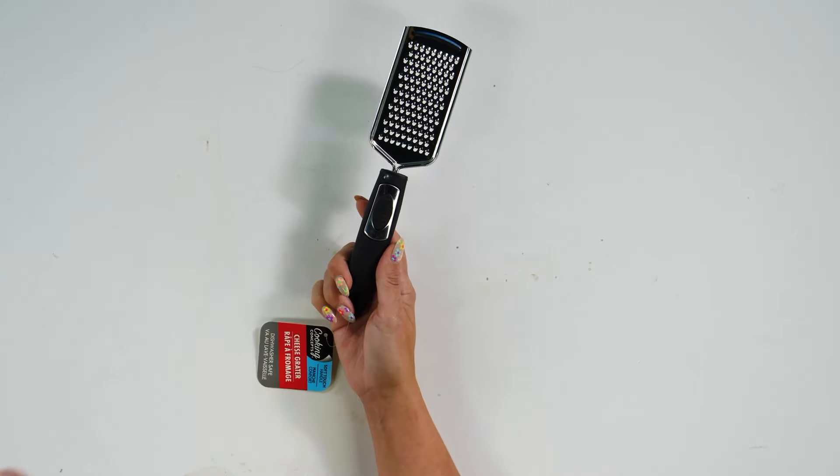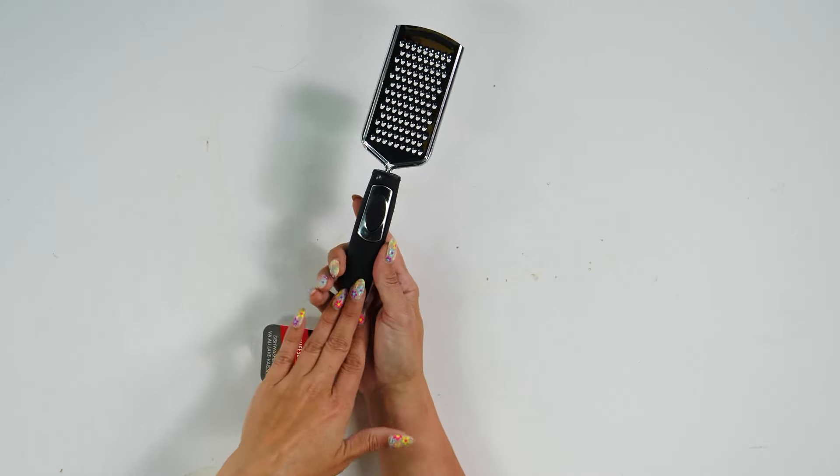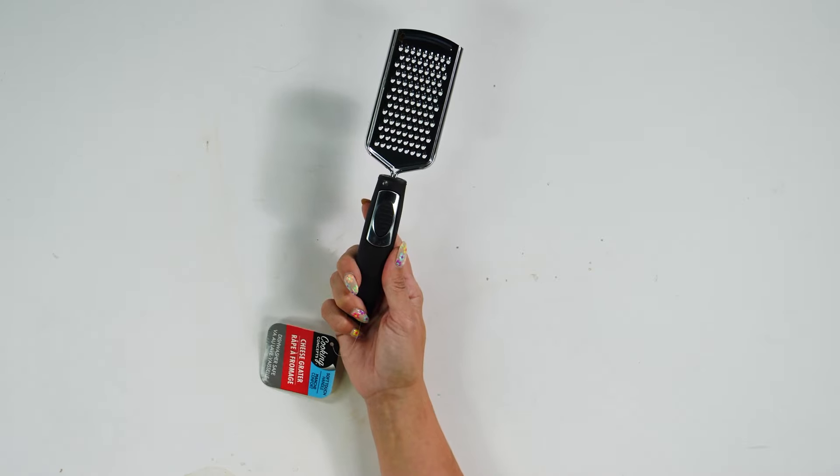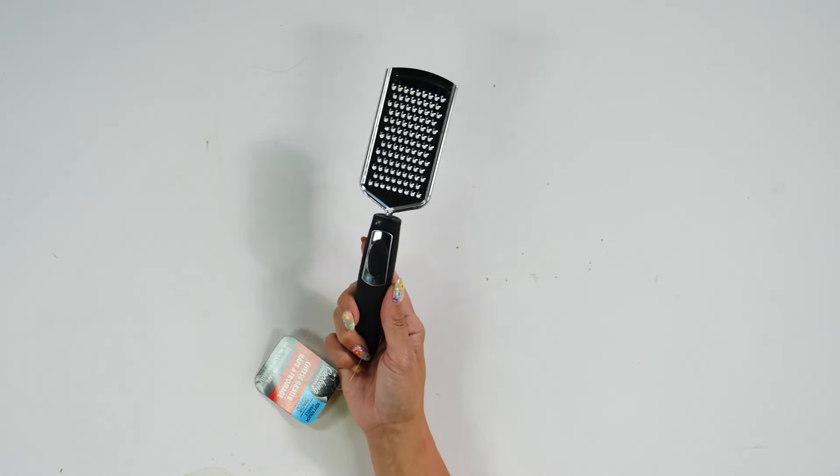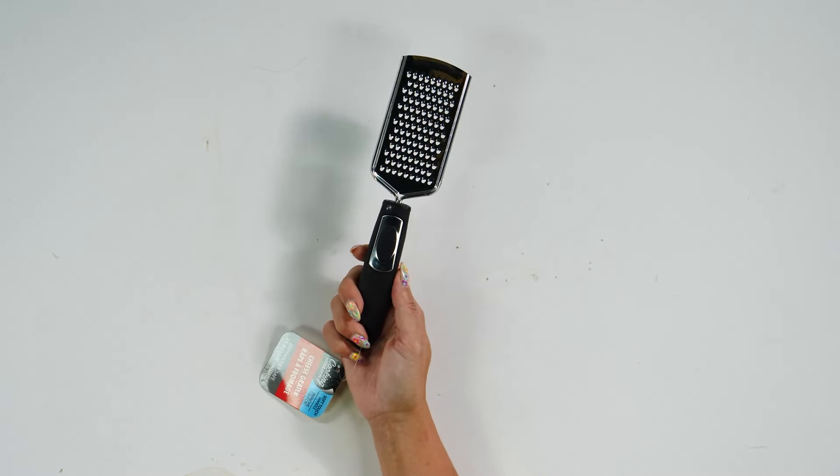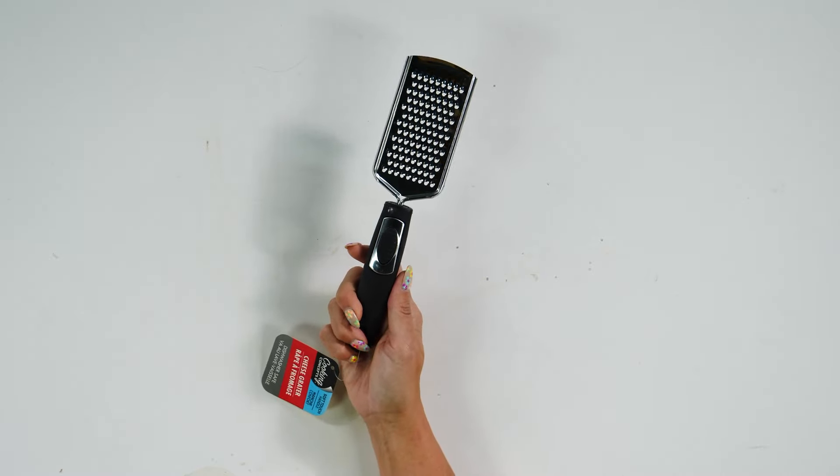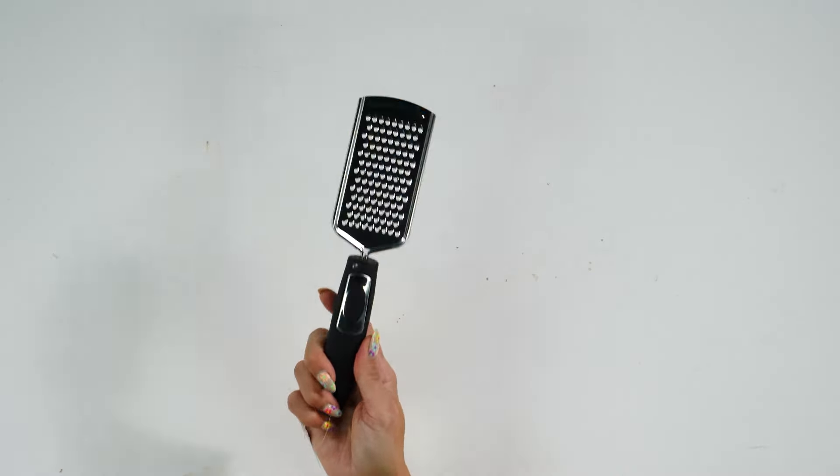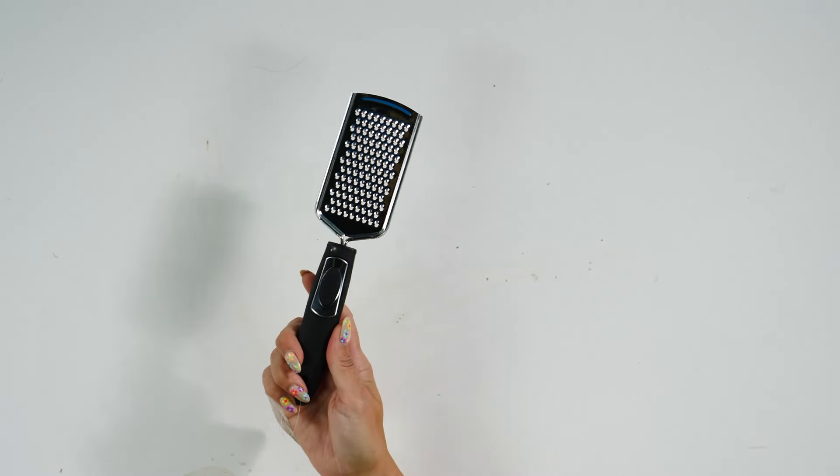This looks phenomenal when you're doing varsity letters for a distressed varsity shirt, things like that. We've done this on a TikTok and a short before, but we're going to be doing a full video on this very soon. So if you don't want to miss that, make sure you subscribe to our channel so you can see exactly how we use this cheese grater to distress HTV.